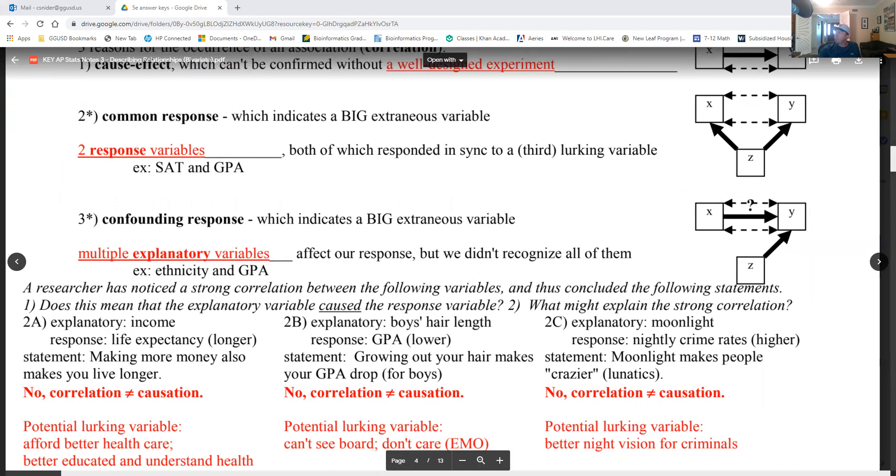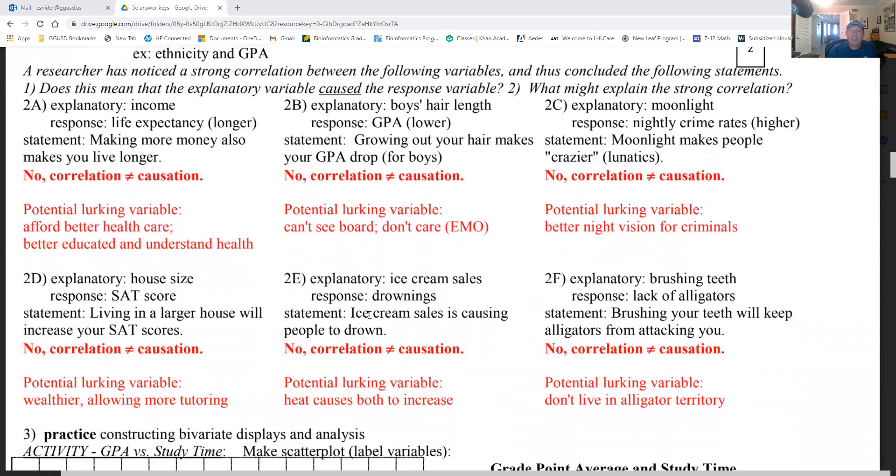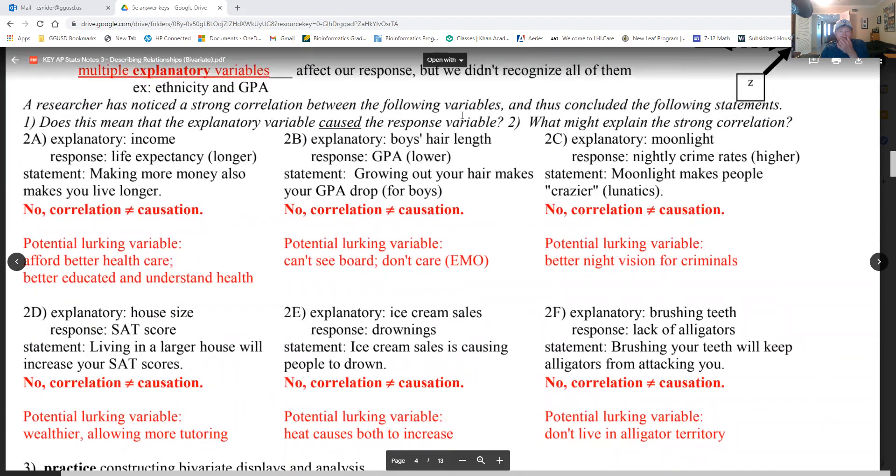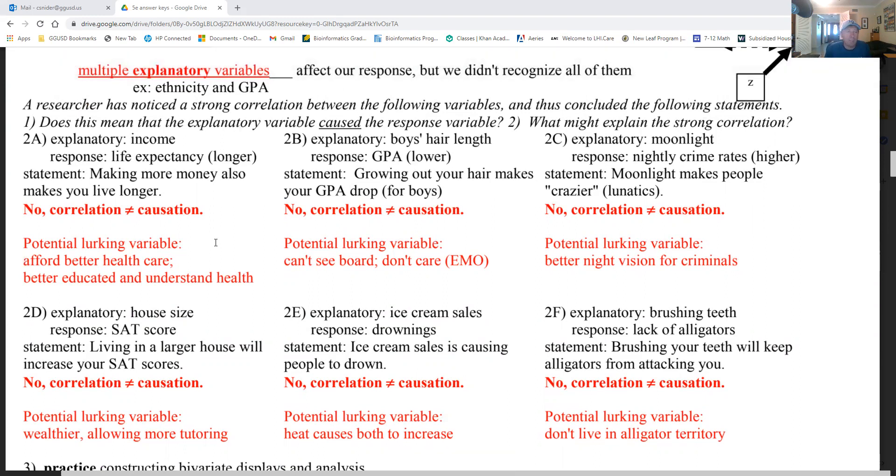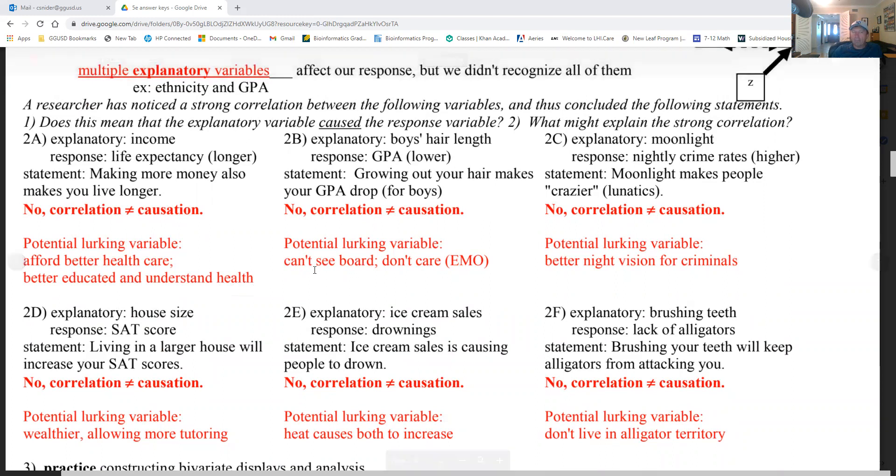Let's go through some of these questions. A researcher has noticed a strong correlation between the following variables and thus has concluded with the statements. Does this mean the explanatory variable caused it or not? What might explain a strong correlation? These are kind of fun. Income as the explanatory variable, life expectancy. So you can imagine this on an axis: the more money you make, the higher your life expectancy. This is not, this is correlation not causation. And the reason is the potential lurking variables is, remember, money does buy better health care, better educated, and they understand health better, all that kind of stuff.